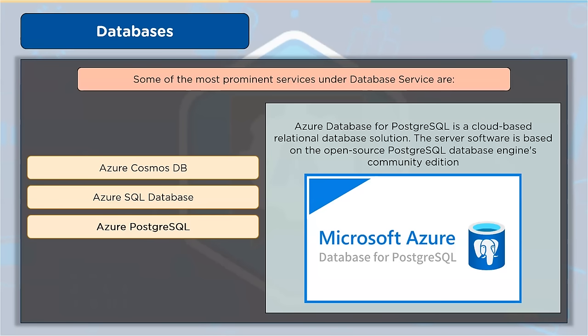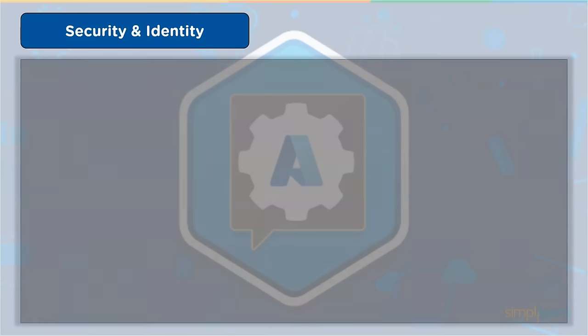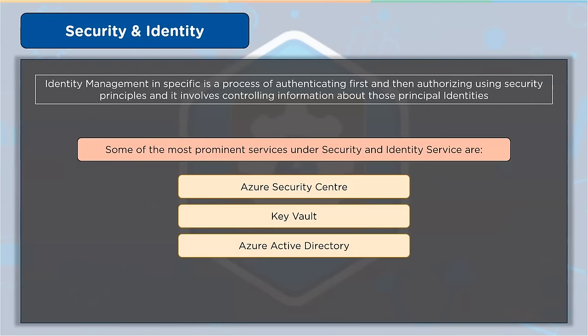Now let's explore security and identity — two integrated services we'll discuss together. Identity management is a process of authenticating and then authorizing using security principles, and it involves controlling information about those principal identities. Key services provided include Azure Security Center, Key Vault, and Azure Active Directory.